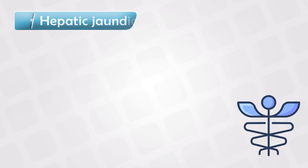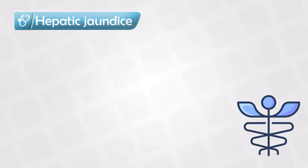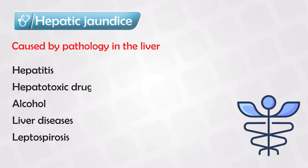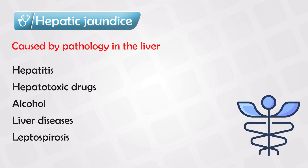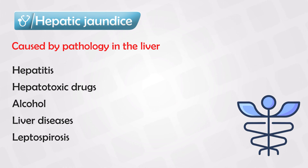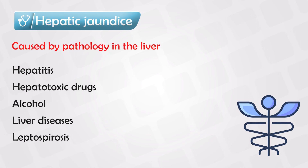The second category is hepatic, which means that the cause of jaundice occurs within the liver. Think of anything that would damage the liver, like acute hepatitis, hepatotoxicity, drug toxicity, alcoholic liver disease, liver disorders like Gilbert syndrome or Crigler-Najjar syndrome, or leptospirosis.